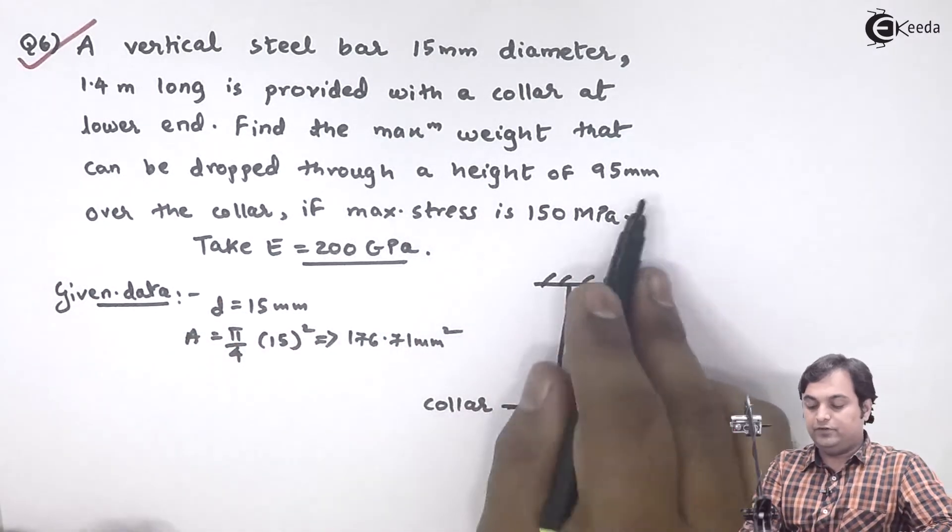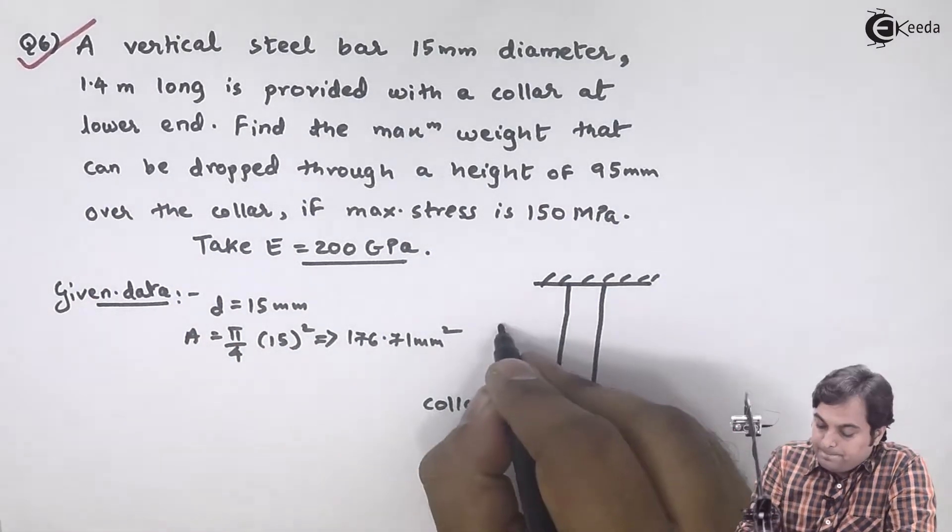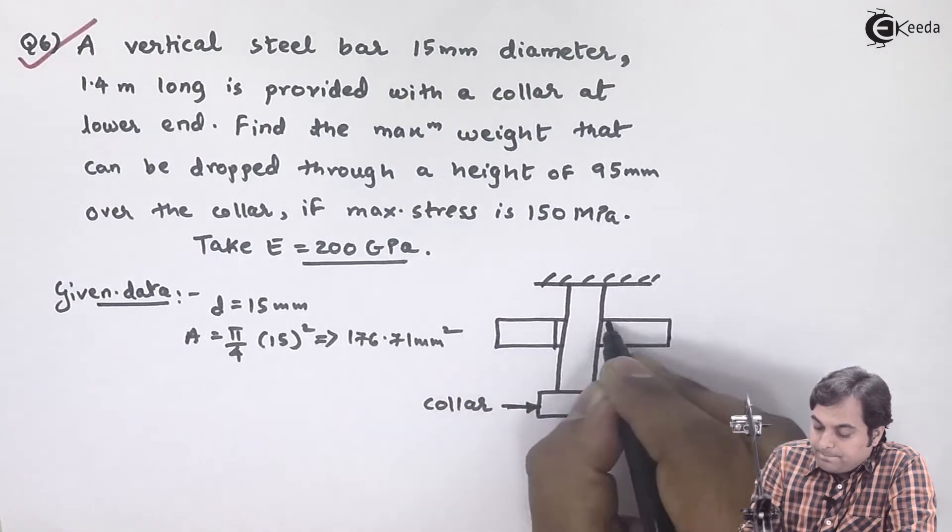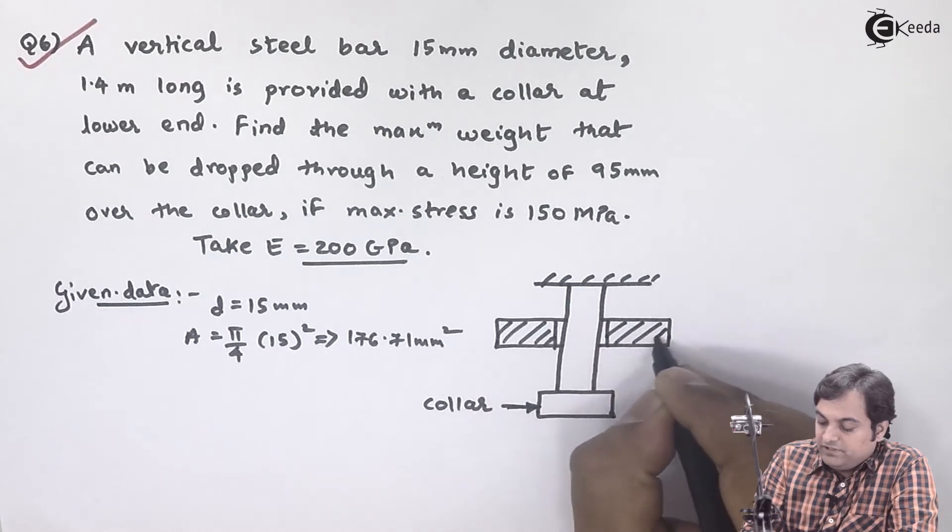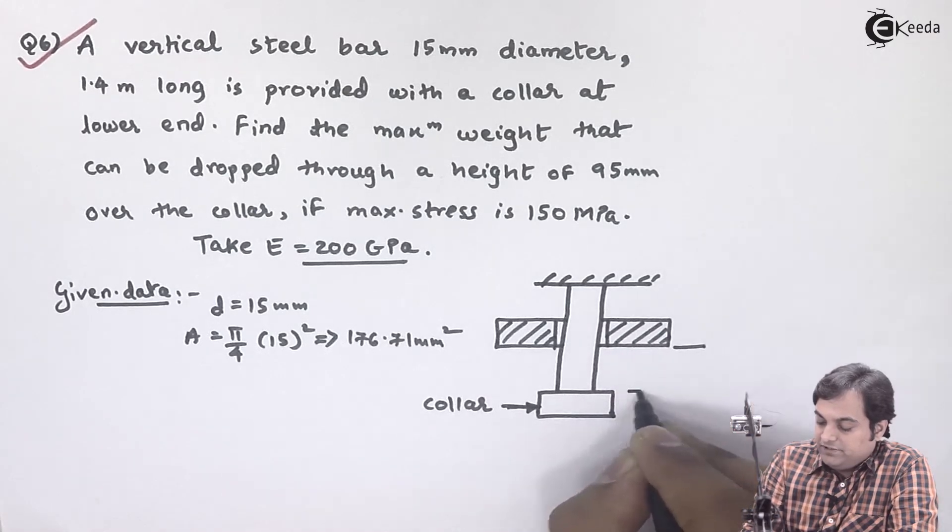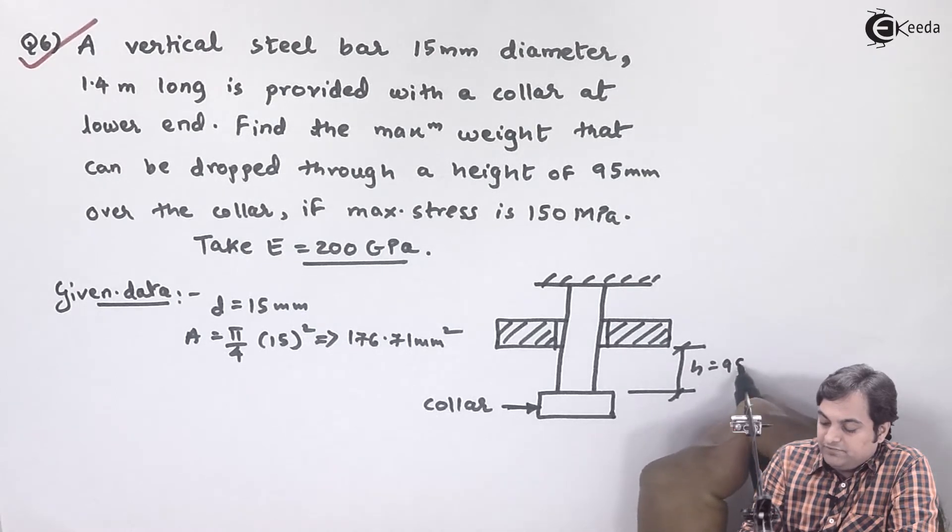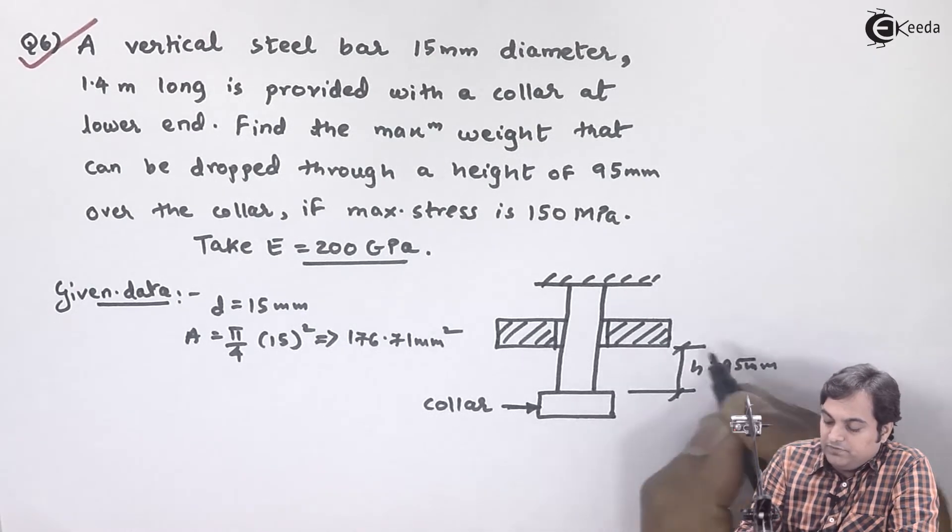that can be dropped through a height of 95 mm. Here a weight is attached, and the height up to the collar is given as H = 95 mm. We have to calculate